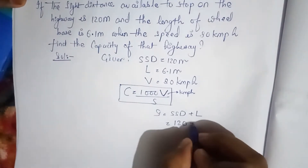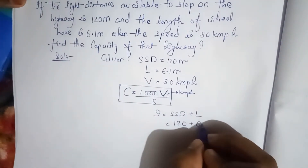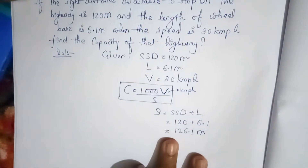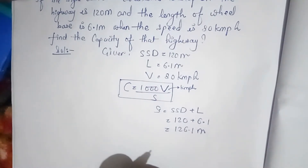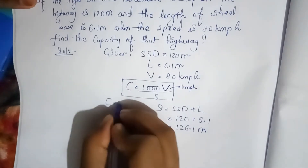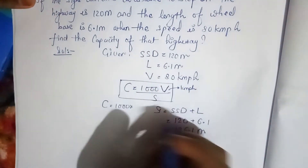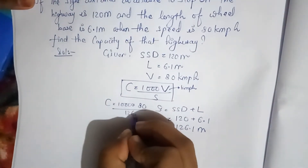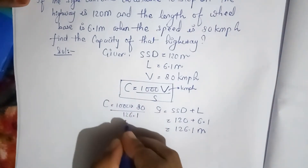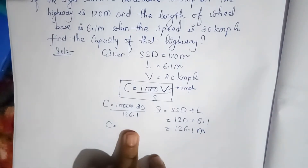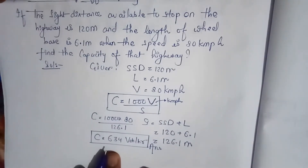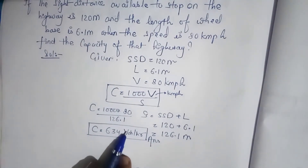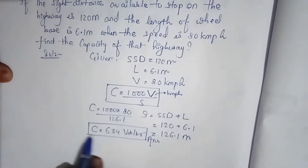SSD is 120 meters and length of wheelbase is 6.1 meters, so S = 120 + 6.1 = 126.1 meters. Putting this and V = 80 kmph into the formula C = 1000V / S, we get: C = (1000 × 80) / 126.1, which gives a capacity of 634 vehicles per hour.